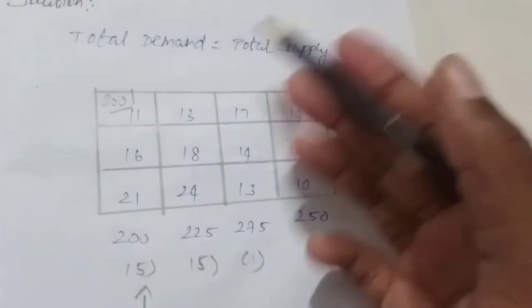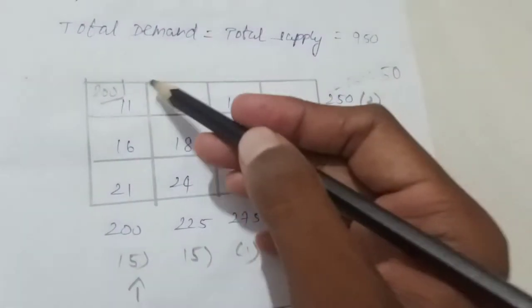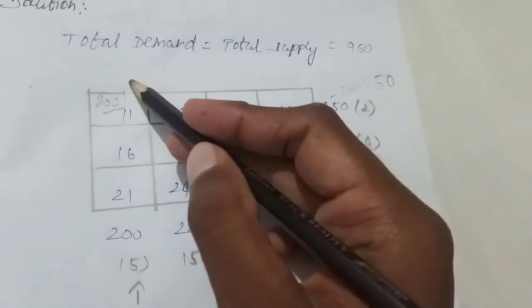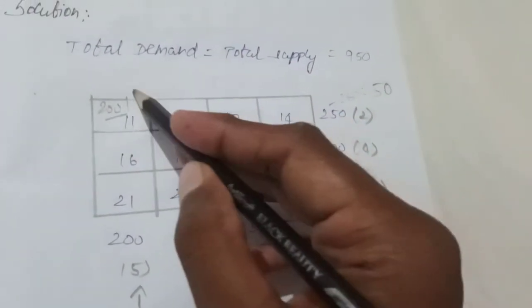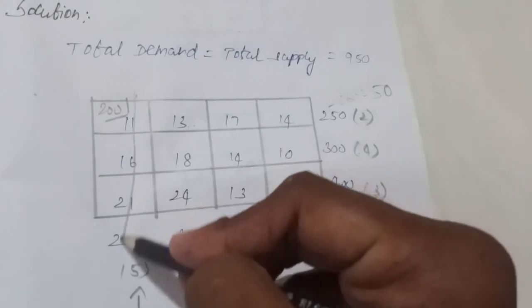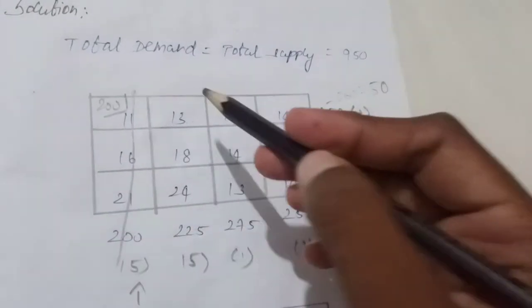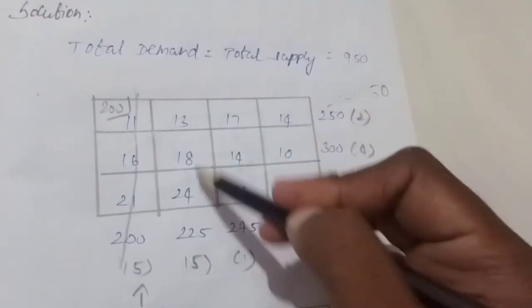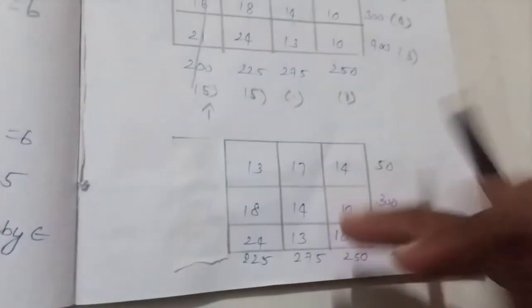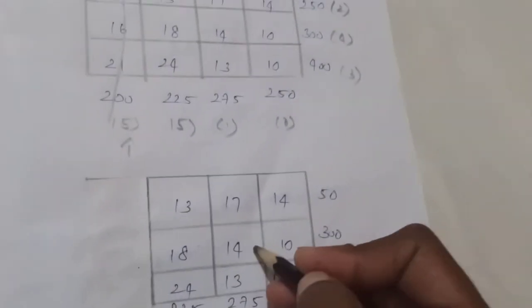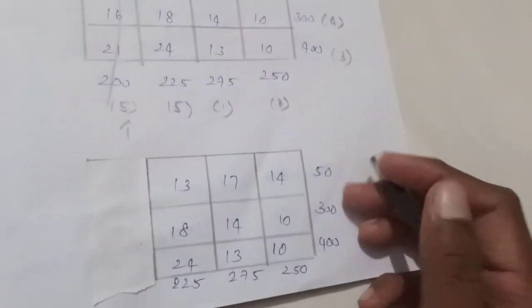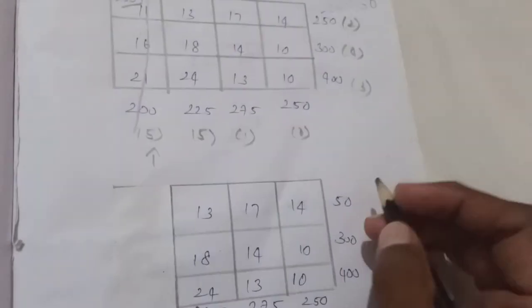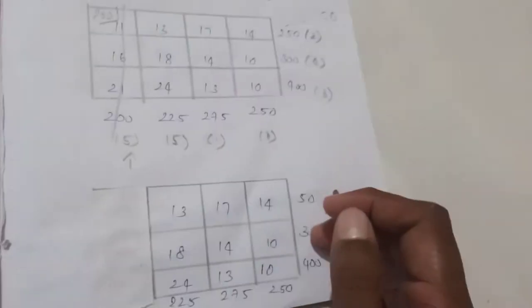Once we subtract the minimum value and the supply or demand is exhausted, we strike out and cancel that row. We continue to the next row and cancel each row that has been fully allocated.